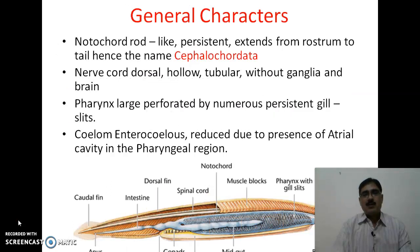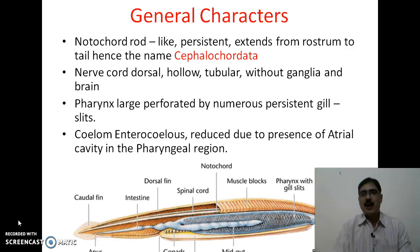The notochord is rod-like, persistent, and extends from the rostrum to the tail — hence the name given to the subphylum Cephalochordata. The nerve chord is dorsal, hollow, and tubular, and it is without ganglia and brain, so both brain and ganglia are totally absent in cephalochodates. This is unlike non-chordates, in which the nerve chord is located on the ventral side and is generally paired and solid; in chordates it is always on the dorsal side and tube-like.